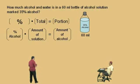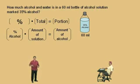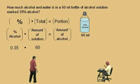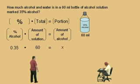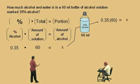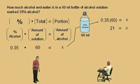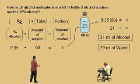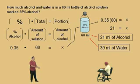Which one are we looking for — the percent, the total, or the portion? The portion, because we're asked how much alcohol is in this solution. Our percent alcohol as a decimal is 0.35. Our total amount of solution is 60 milliliters. And the amount of alcohol is what we're looking for, so we mark that as x. So on the left-hand side: 0.35 times 60 equals x. That gives us 21. So in this 60-milliliter bottle, there are 21 milliliters of alcohol. To find the water, subtract 21 from 60 — we get 39 milliliters of water. Notice the two must add up to 60. And don't forget: if it was 35% alcohol, it means it was 65% water.